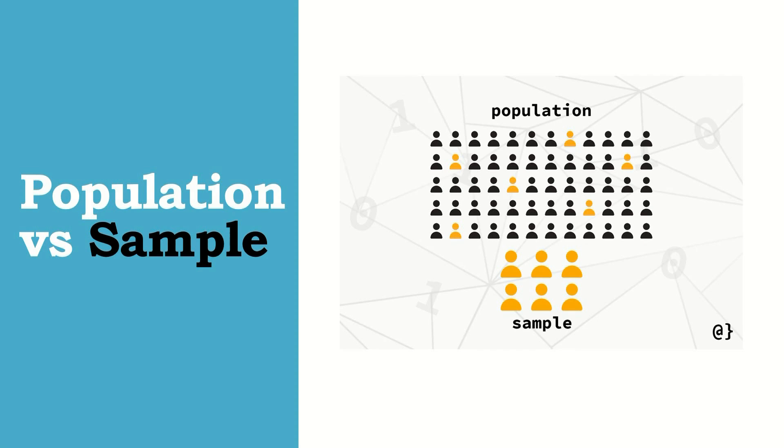First, dapat alamin muna natin yung pagkakaiba between population and sample. When we say population, the population is the entire group that you want to draw conclusions about. While when we say sample, it is the specific group of individuals that you will collect data from. The population can be defined in terms of geographical location.